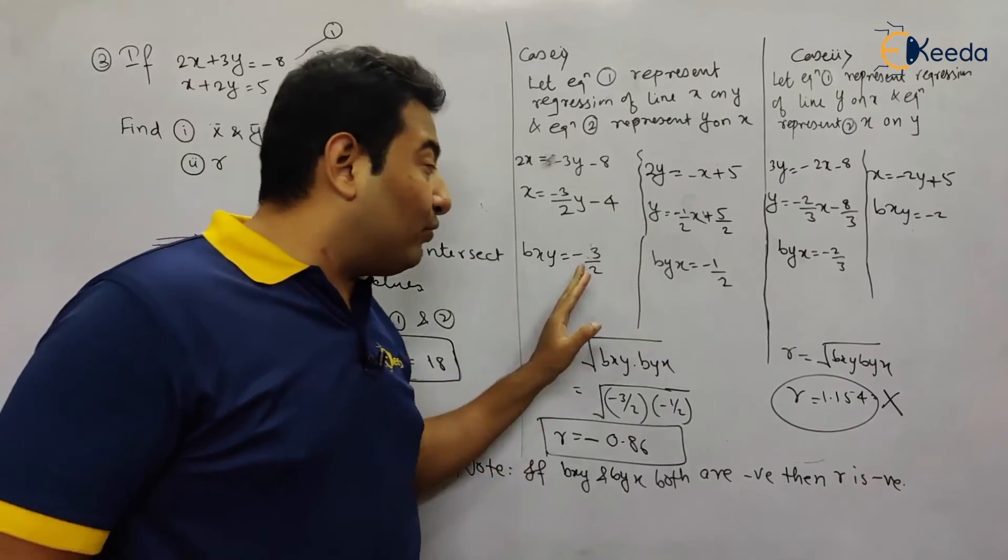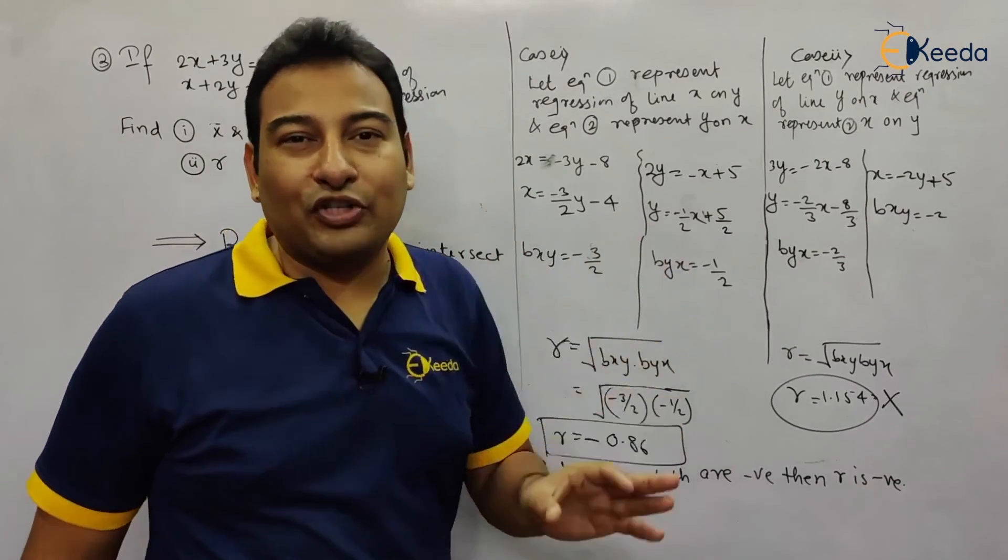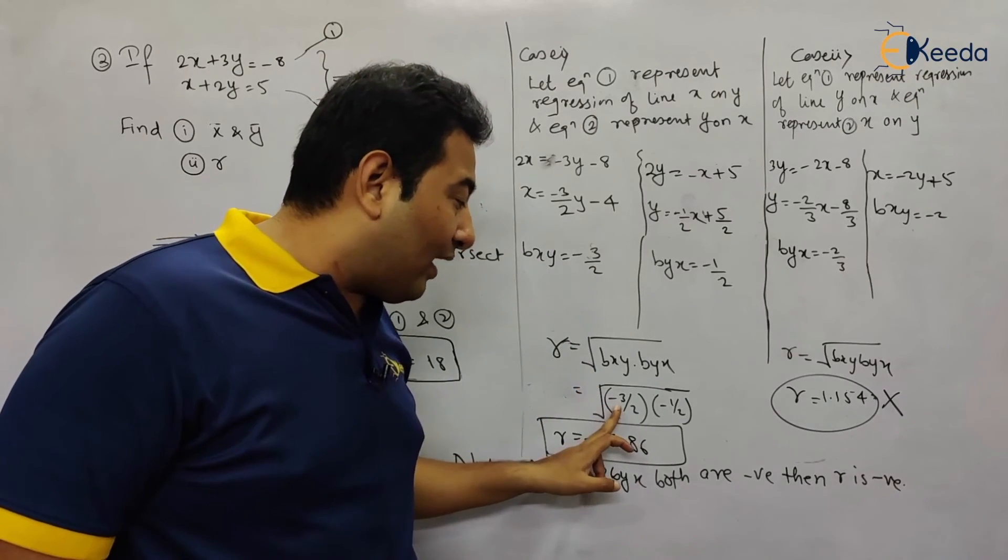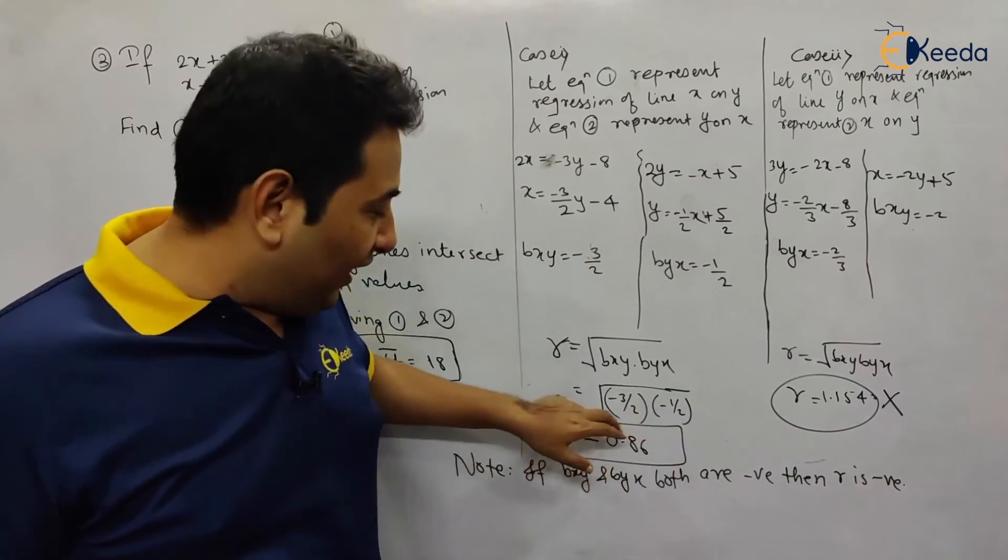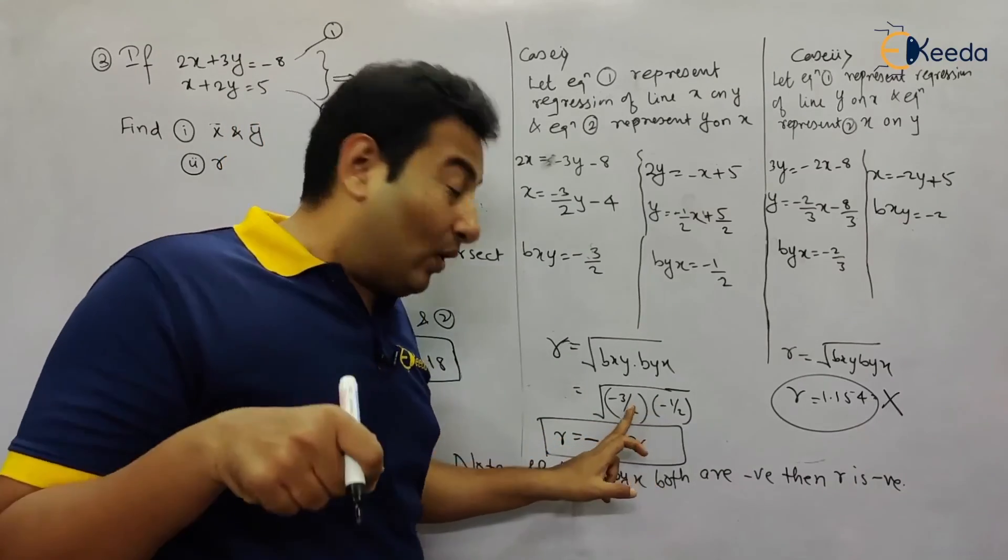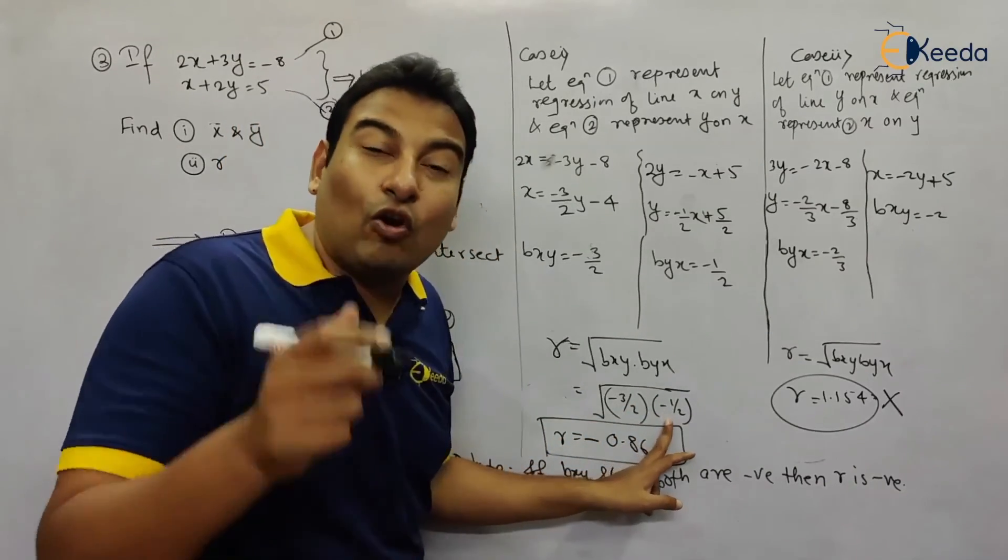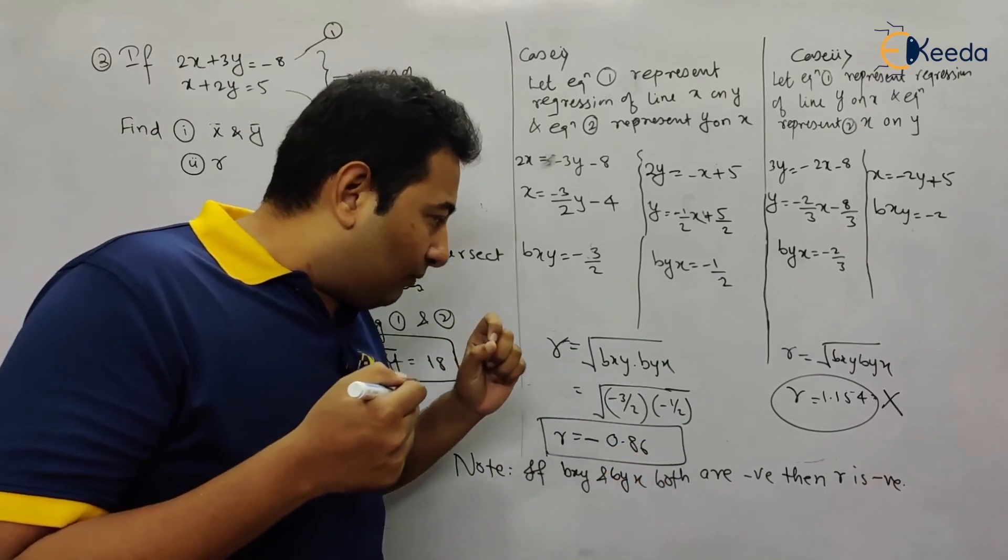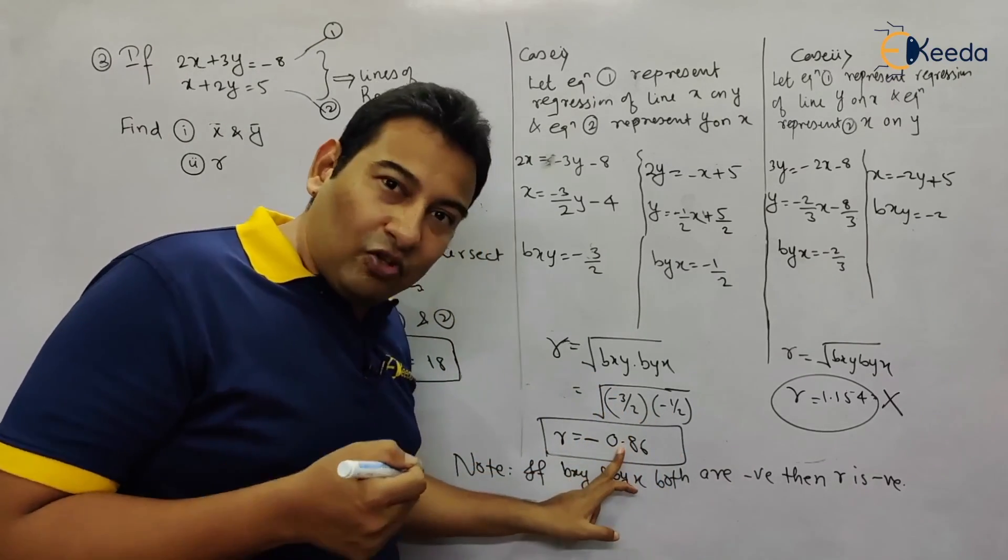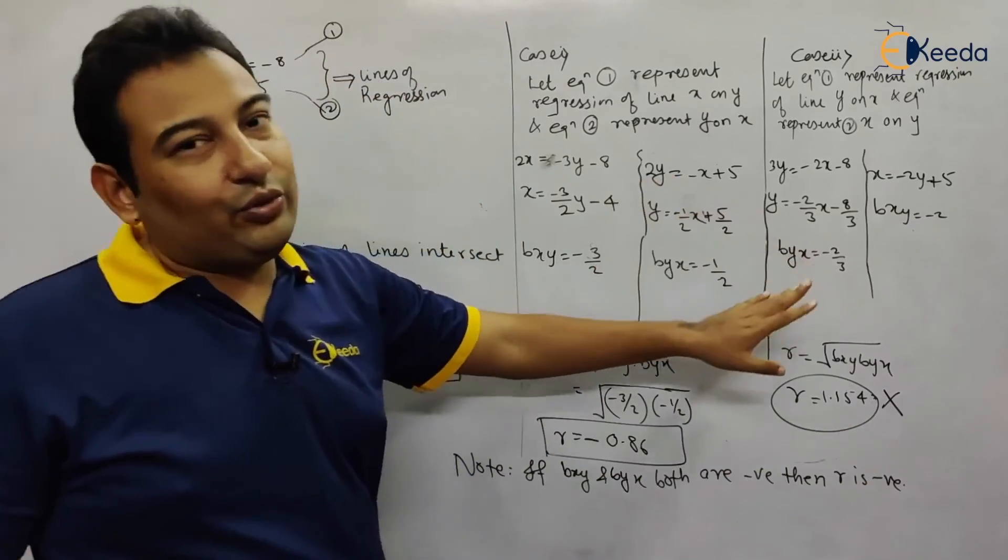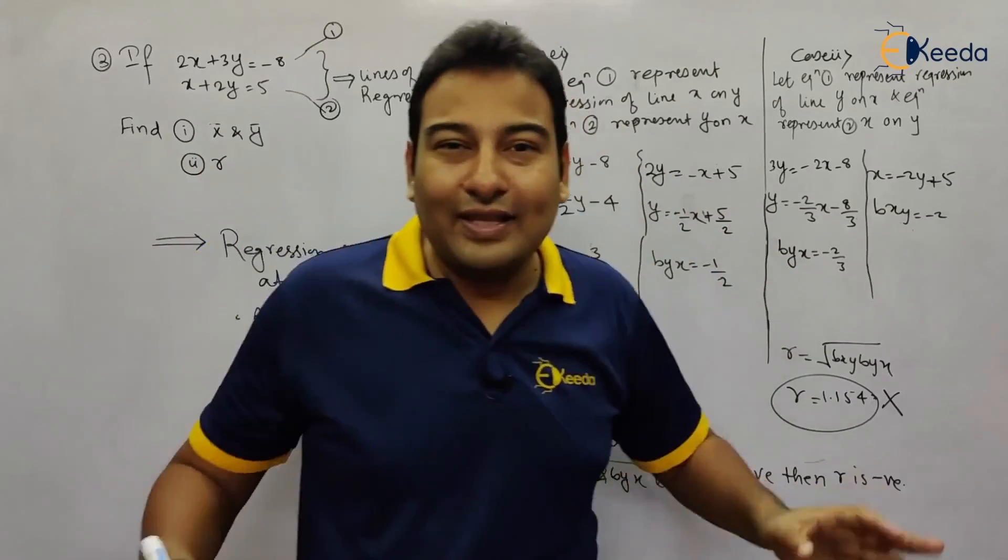What if one value is negative and the other positive? Not possible—that's a mistake. Why? Because inside the square root you cannot have a negative number. If both are negative, minus times minus becomes plus. But if one is negative and the other positive, that's not allowed. When both are negative, the answer will be positive, but you must write it as negative. This is very important to remember. Hope you understood. We're done with the problem. Thank you.